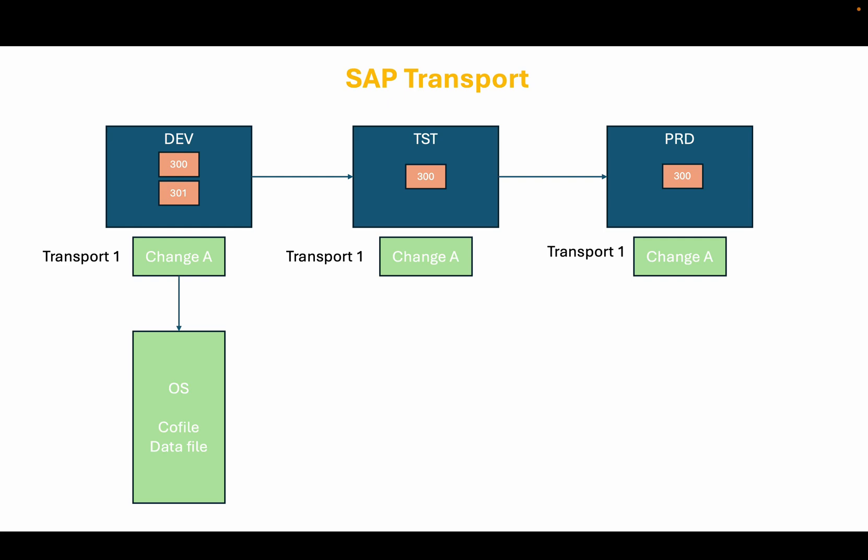Co-files are stored at the operating system level in the /usr/sap/trans/cofiles directory. The data file contains the actual data or objects that are being transported. This includes source code, configuration settings, and any other data that needs to be moved from one system to another. The data file is stored in the /usr/sap/trans/data directory on the SAP file system at the operating system level.